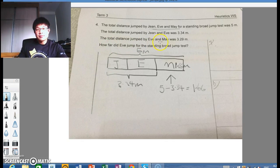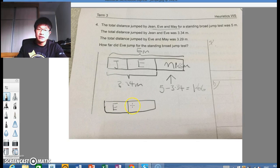The total distance jumped by Eve and May was this. So actually, we don't need to model with Gene. What I would prefer to do is to just draw a model for Eve and May. Again, whose model is larger, whose model is smaller, it really doesn't matter. And the total here is 3.29. And we know that May jumped 1.66.